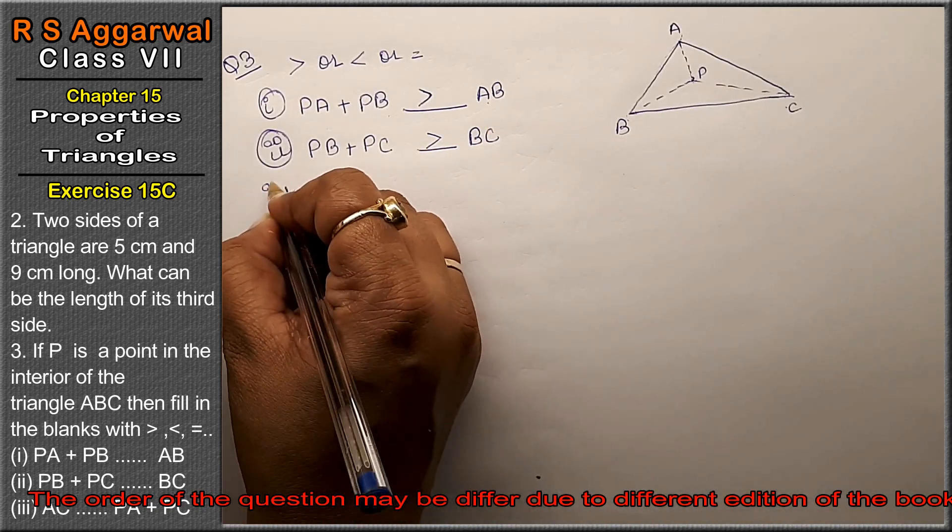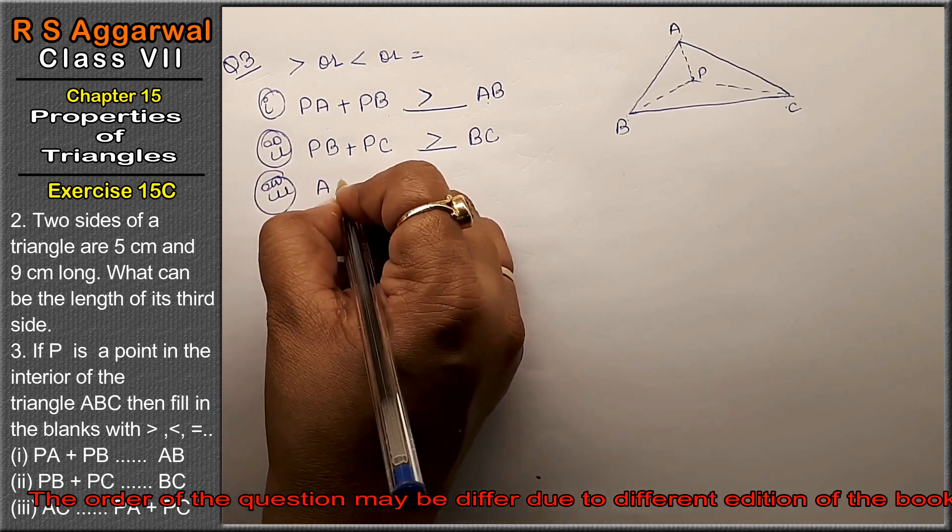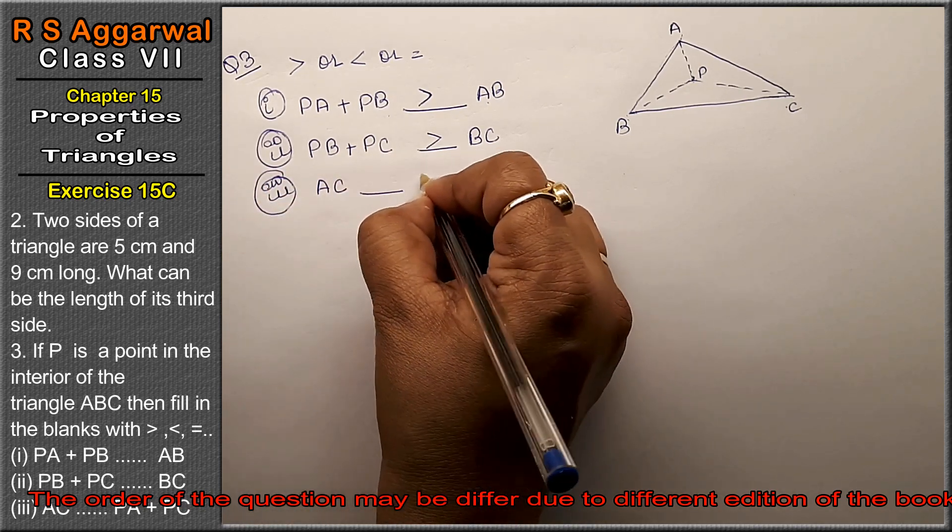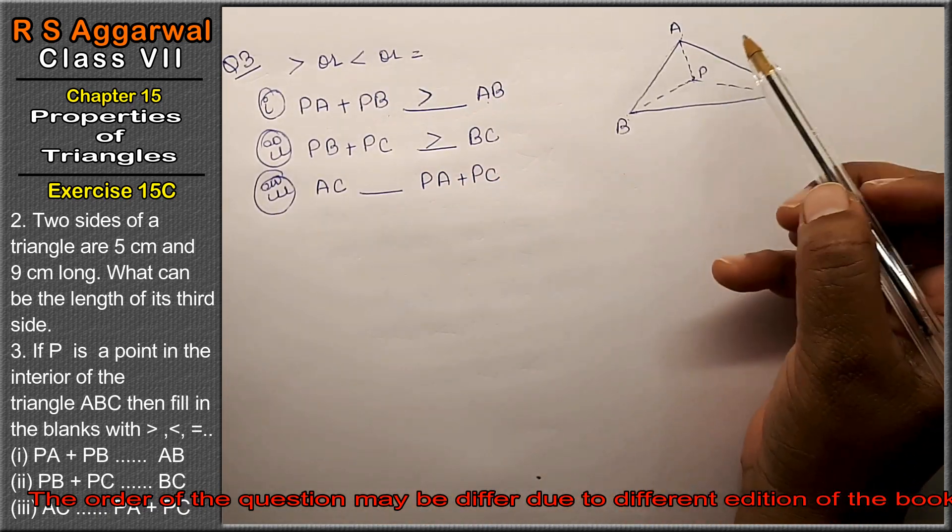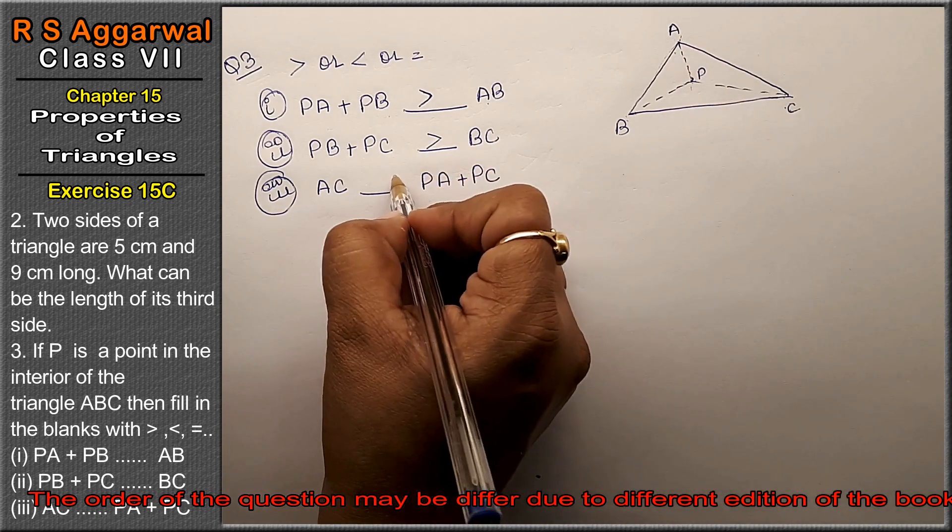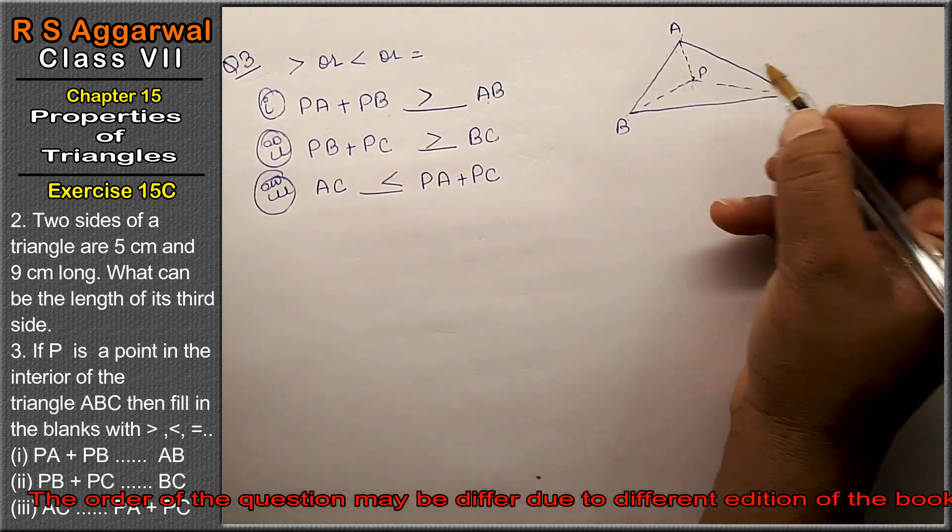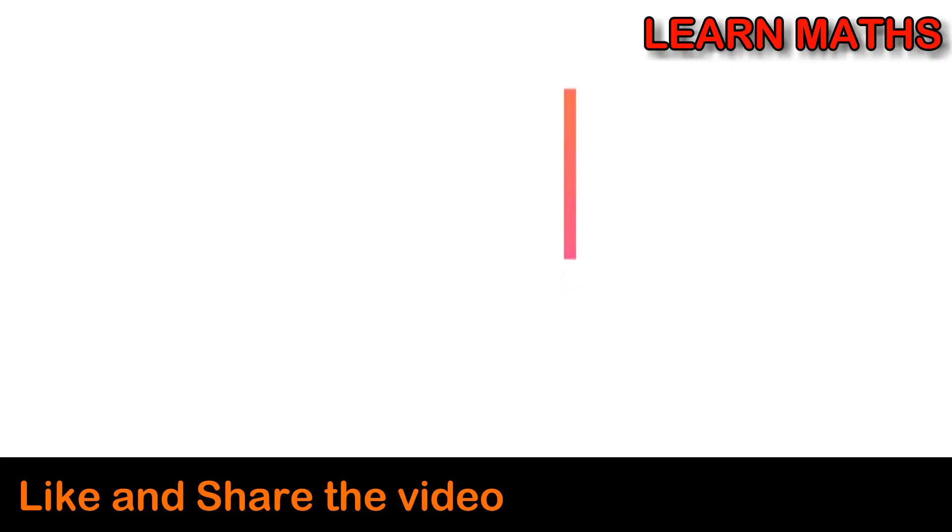Third part: AC dash dash dash PA plus PC. The answer is PA plus PC is greater than AC. This is the answer.